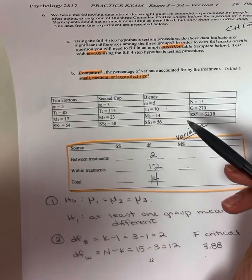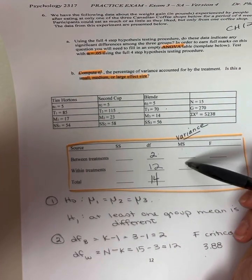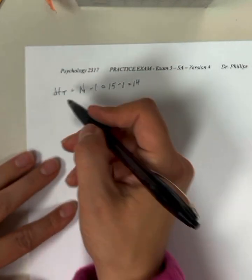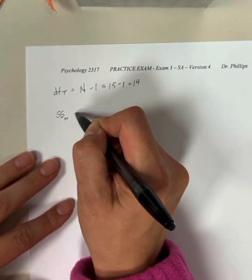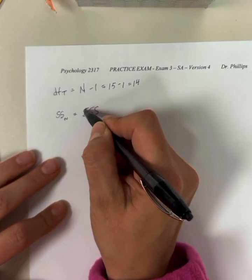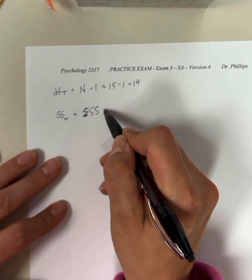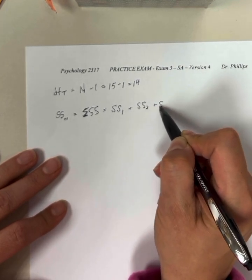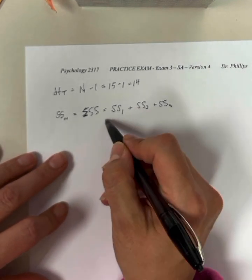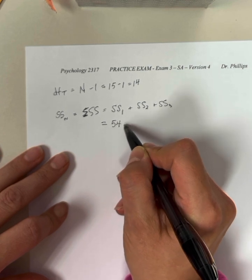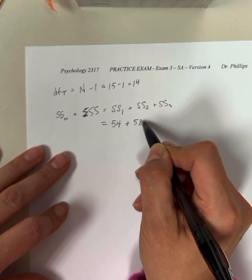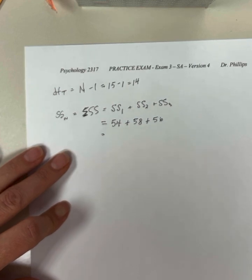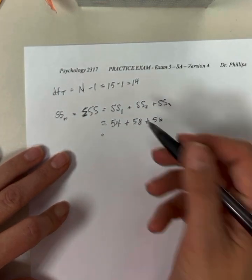The next piece, and I like to look at these as a bit of a logic puzzle, we can't get to the mean squares. We don't have enough yet. We need to calculate our sum of squares. Sum of squares within is the sum of the sum of squares. You can tell it's getting a bit later in the day. My writing is getting remarkably sloppier. This is sum of squares 1 plus sum of squares 2 plus sum of squares 3, however many groups we have. Sum of squares 1 was 54, sum of squares 2 was 58, sum of squares 3 was 56. So 54 plus 58 plus 56 is 168.